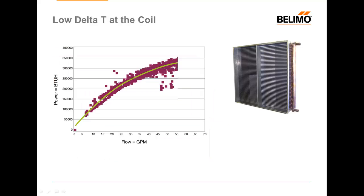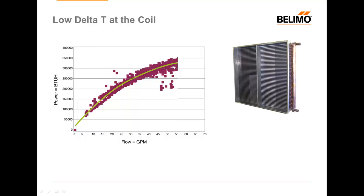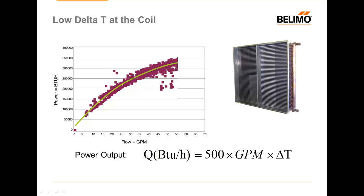Let's take a look at a coil curve and talk about how we can get into trouble here. This is a typical coil characteristic. At low flows the curve is a little bit steeper — a relatively small increase in flow generates a much higher increase in BTU. As I get up into higher and higher flow ranges this heat exchange becomes less and less efficient. Here near the top of the curve it takes a substantially higher increase in GPM to get a relatively modest increase in BTUH. This curve is governed by the formula: Power output equals 500 times the GPM times the delta T. So the load into this space is dependent on both flow and delta T.